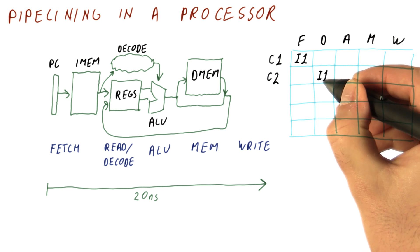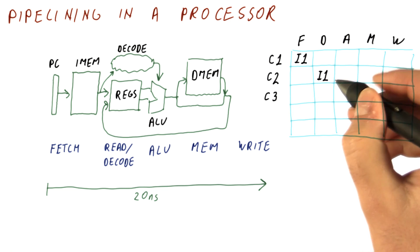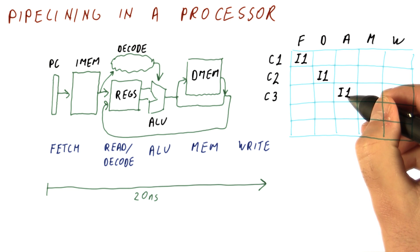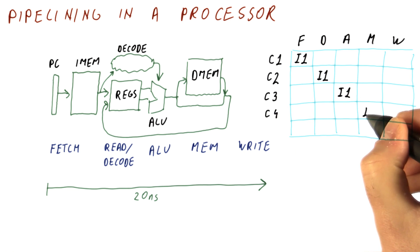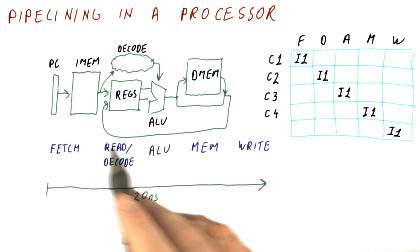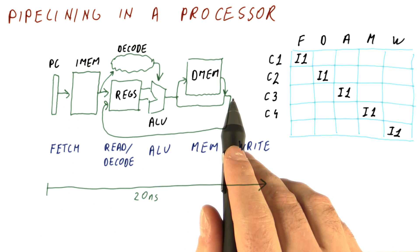instruction I1 moves to decode. In cycle C3, instruction I1 will be doing the ALU operation. In cycle C4, I1 will move to memory. And then in cycle C5, I1 will write the result. Next cycle we can begin instruction two. If we do that, we really will finish one instruction every 20 nanoseconds.